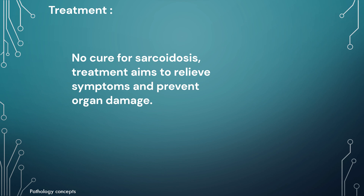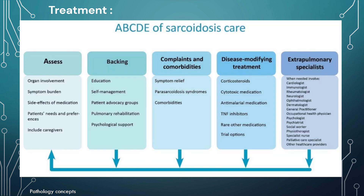Now let's learn about treatment. While there is no cure for sarcoidosis, the treatment aims to relieve symptoms and prevent organ damage. Not every patient needs to be treated; patients can be followed over long periods because spontaneous resolution may occur. Development of dangerous clinical conditions and significant impairment in quality of life are two major indications to start interventional treatment. Oral corticosteroids such as prednisolone are the first line of treatment to reduce inflammation and suppress the immune system. Other modalities include immunosuppressive drugs for those who do not respond to corticosteroids, anti-inflammatory medications for joint pain and skin rashes, and medications to treat specific organ involvement such as eye drops for uveitis.